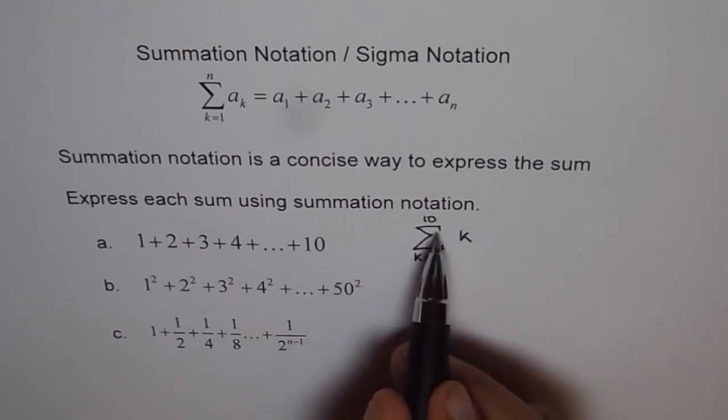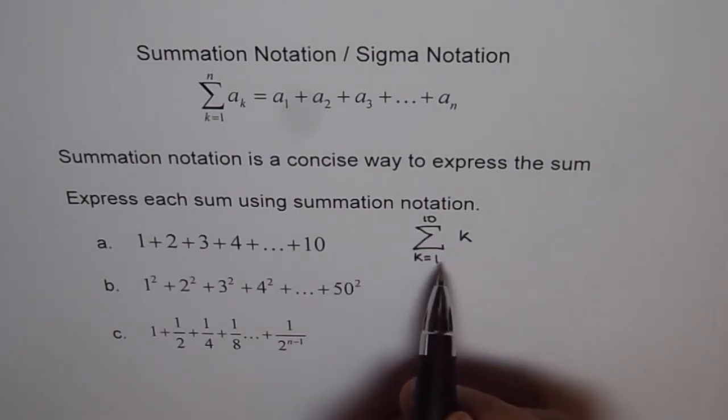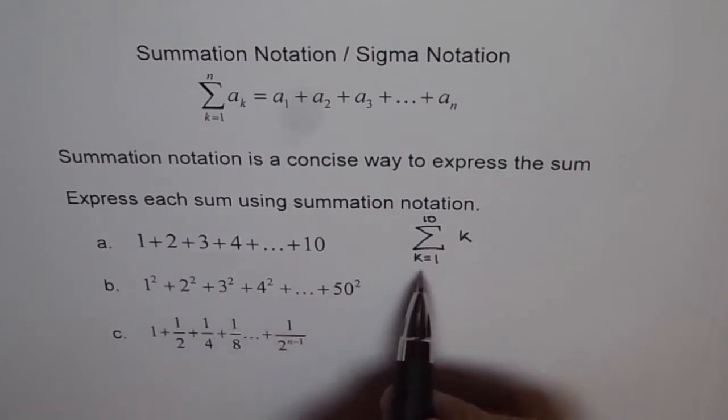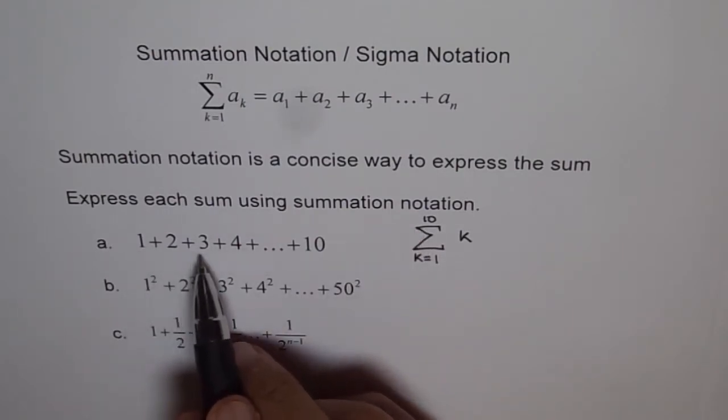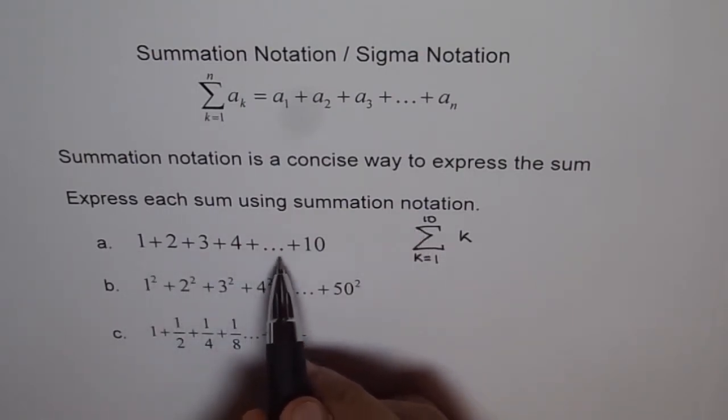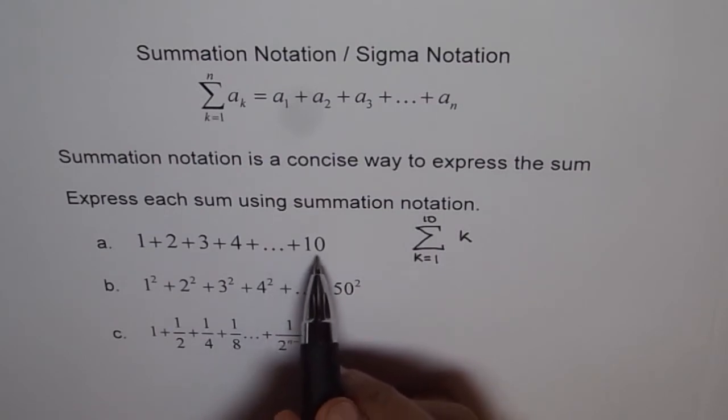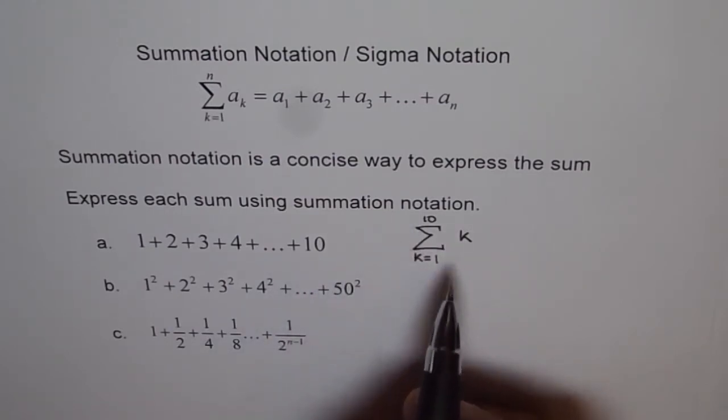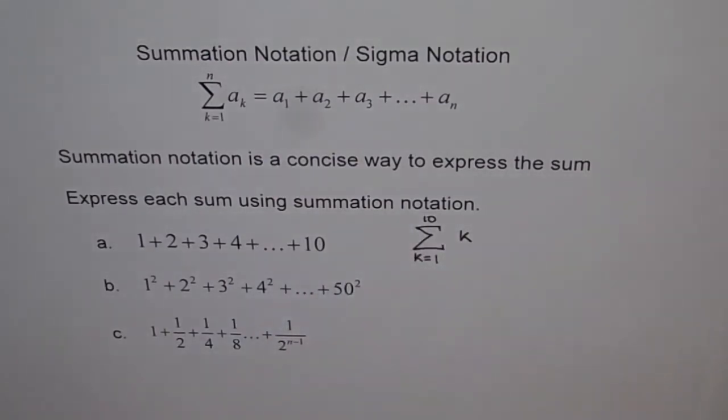Plus, this sign is for plus, sum. If K is 2, 2, up to 10. So 1 plus 2 plus 3 plus 4 plus 5 plus 6 plus 7 plus 8 plus 9 plus 10 can be written in this concise form, right? That is what summation notation does for us.